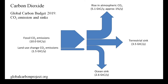This slide shows the budget for 2019. Most CO2 emissions, around 10 gigatons of carbon, originated from the burning of fossil fuels, while deforestation and land use contributed with a further 1.5 gigaton of carbon. About one-half of these emissions were absorbed by the oceans and by terrestrial sinks, while the rest of the emissions remained in the atmosphere and caused the CO2 concentration to increase by about 1%.